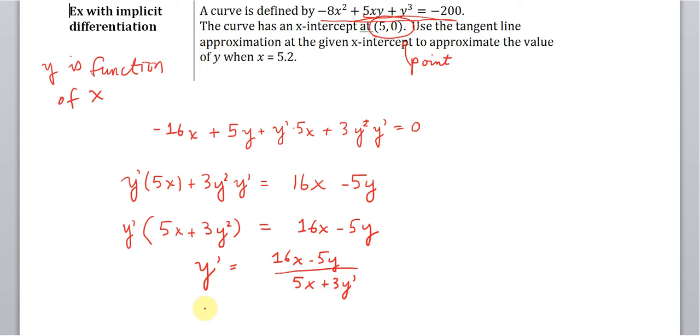And so y' here, this is really the same thing as dy/dx. I don't write dy/dx just because it kind of clutters up the picture. So we found the expression for the derivative. And now what we need to do is figure out the slope at the point (5,0).